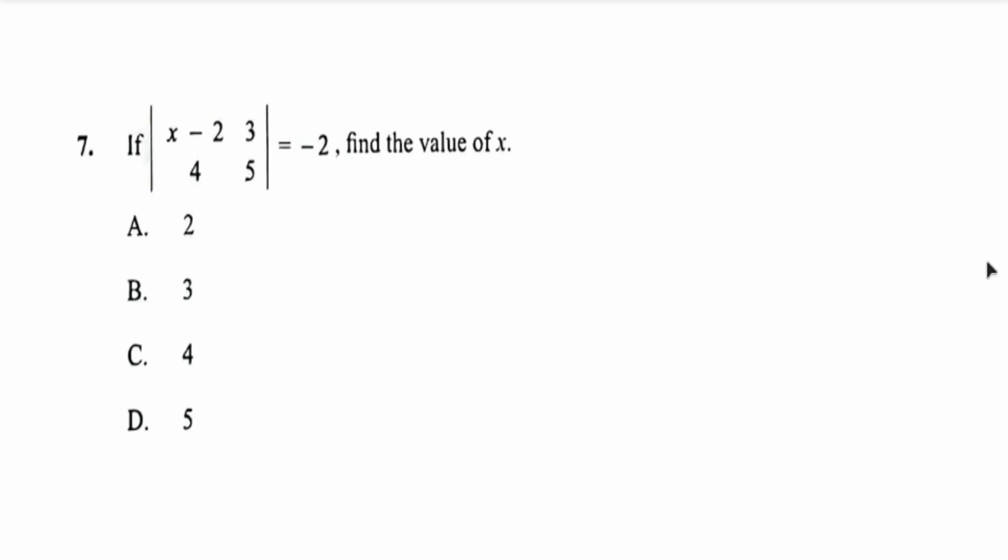We move straight to question 7, which says that if the determinant of the matrix with entries x minus 2, 3, 4, and 5 equals negative 2, find the value of x. I start by saying a little thing about this.